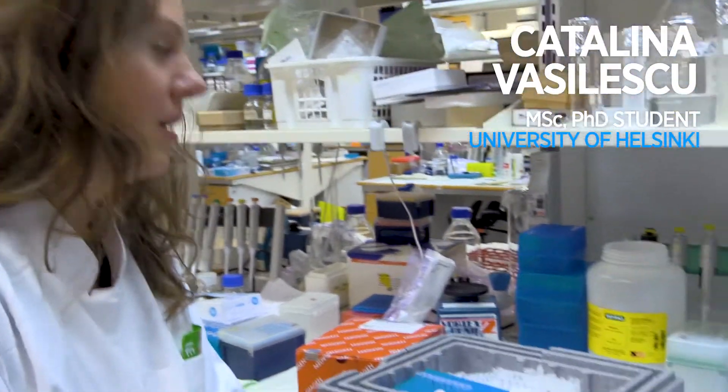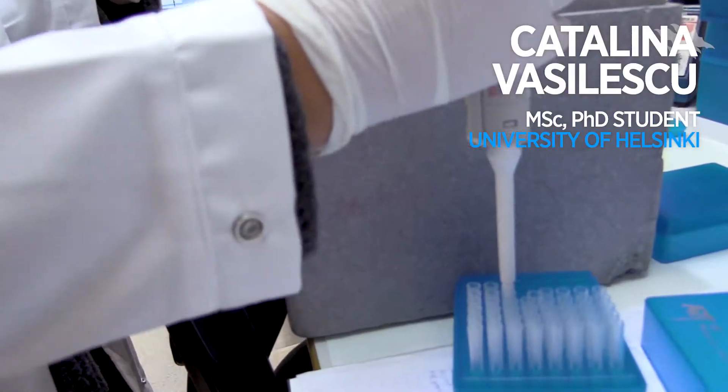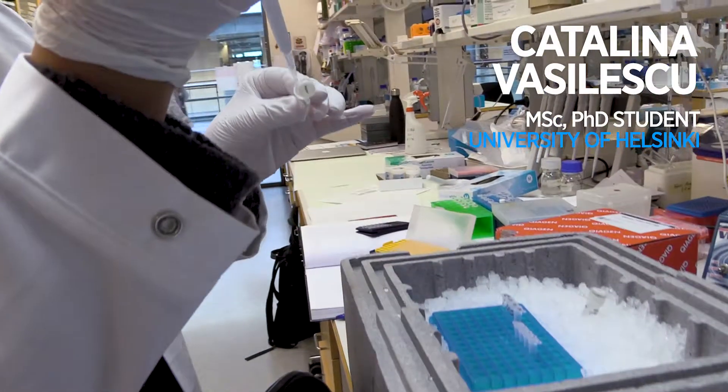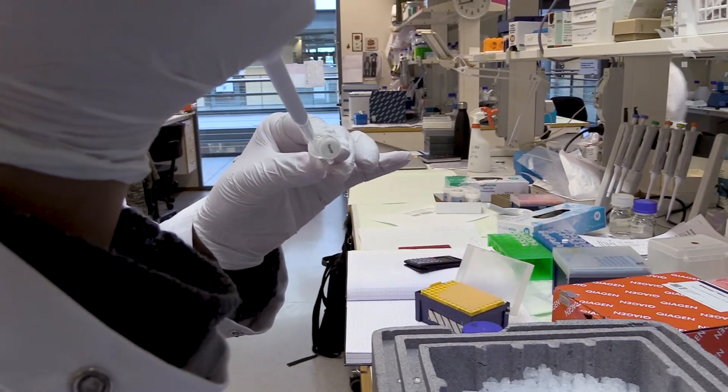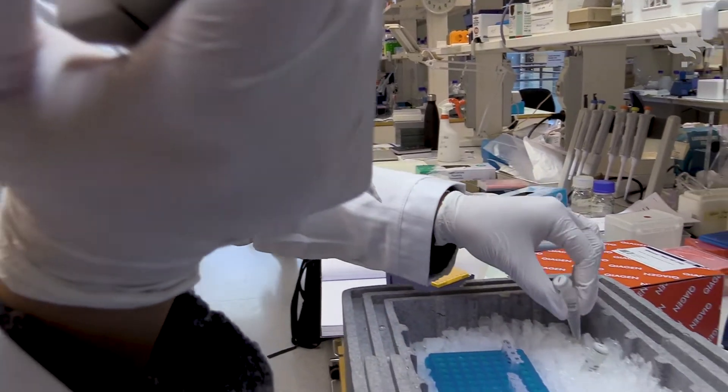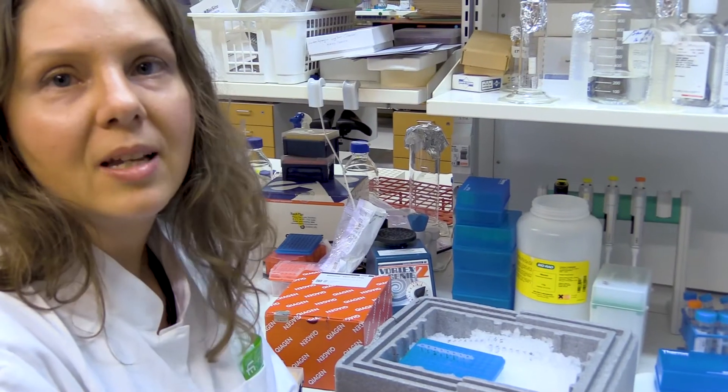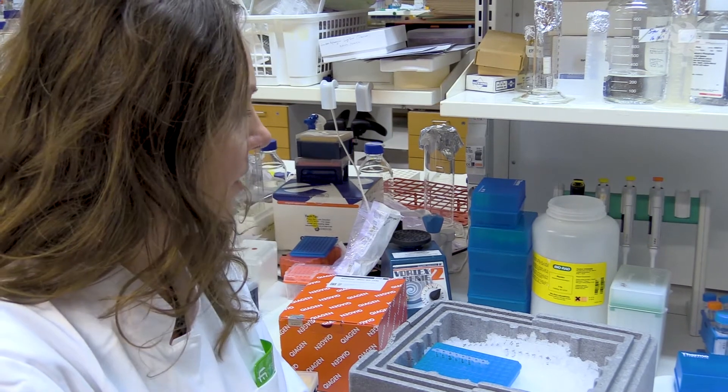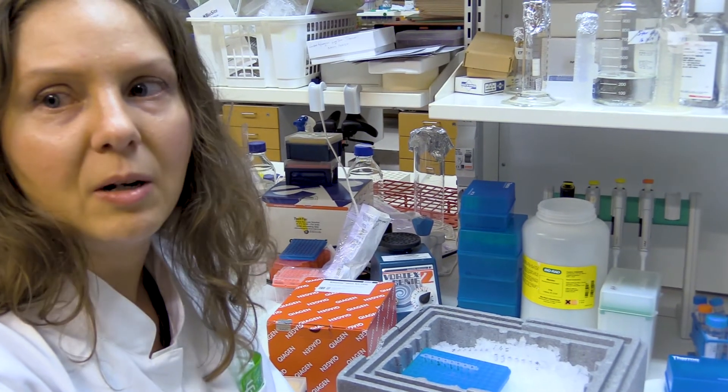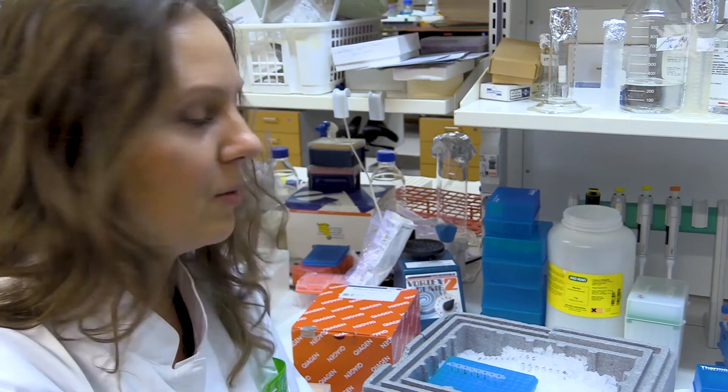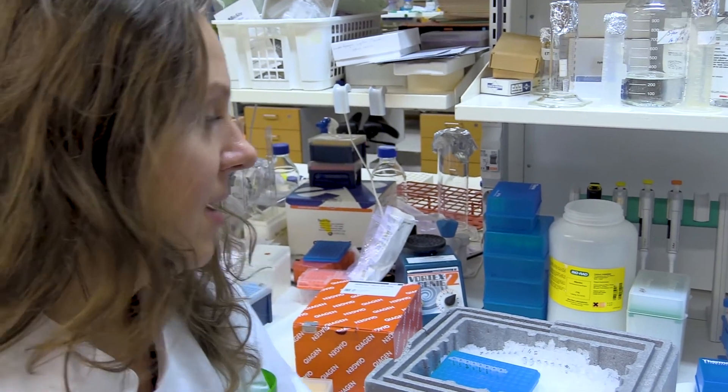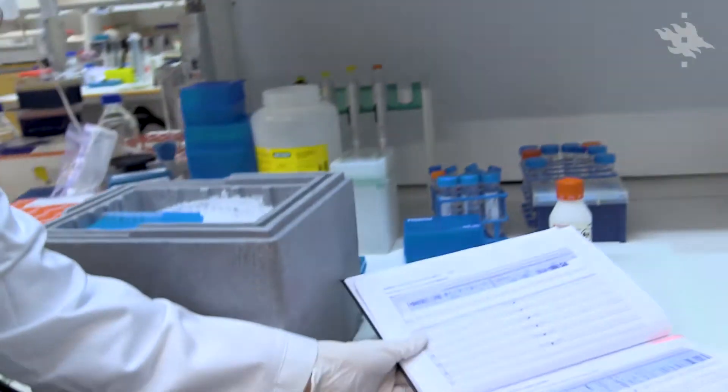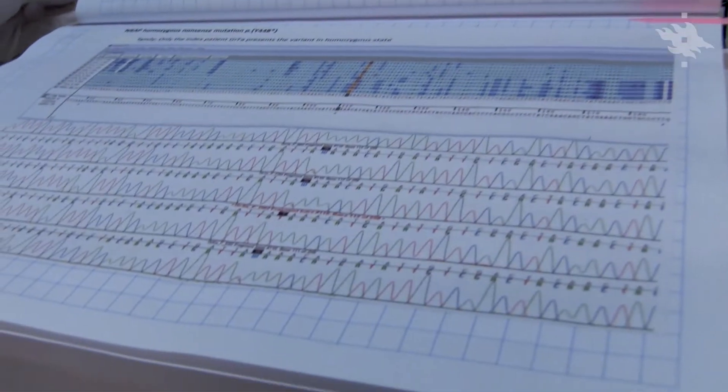Here I'm performing Sanger sequencing reactions, which are determining a small stretch of DNA sequence. Four nucleotides are the building blocks of DNA, and this method is employing modified nucleotides which are marked with chromophores. And as a result, we can read the sequence as I have here in my lab book.